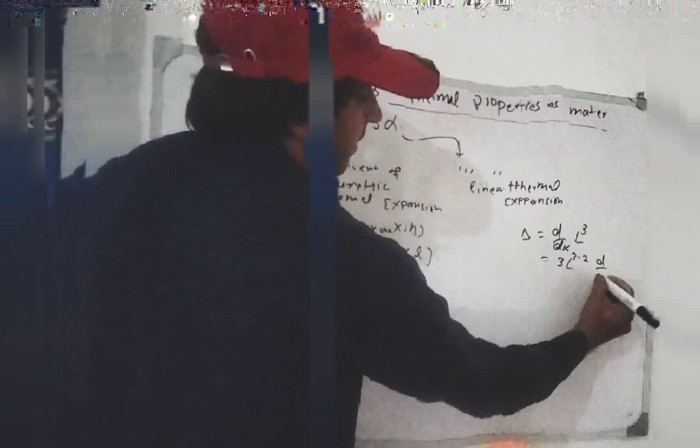Delta V is equal to gamma V0 delta T, and we also have delta V equal to 3 V alpha delta T. The original volume V0 equals V, and delta T cancels on both sides, so gamma is equal to 3 alpha.